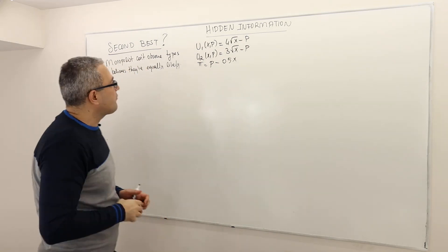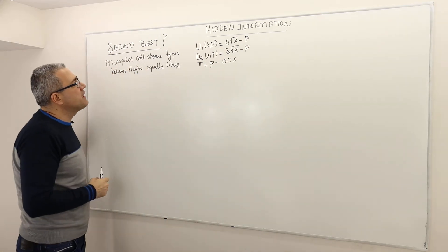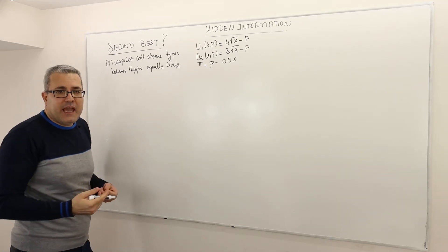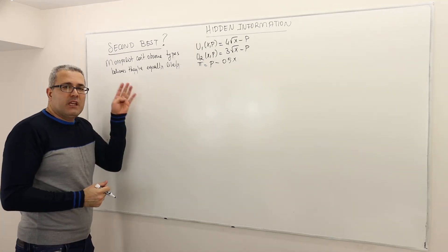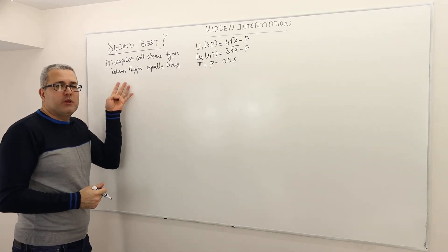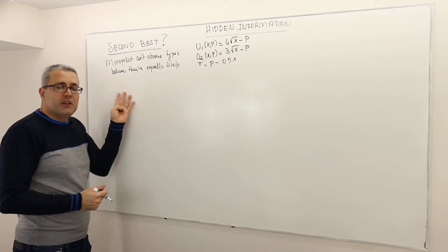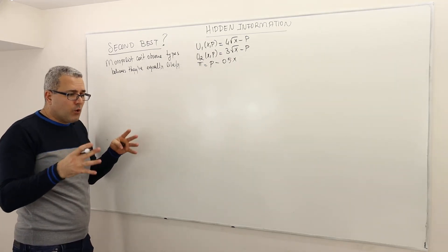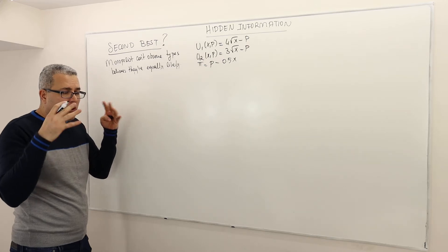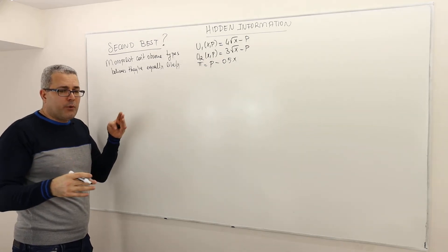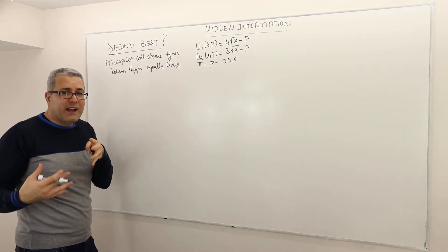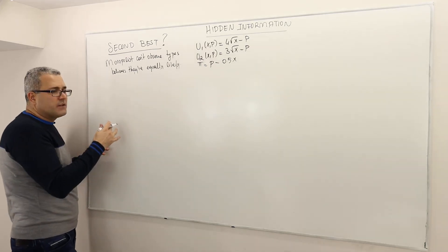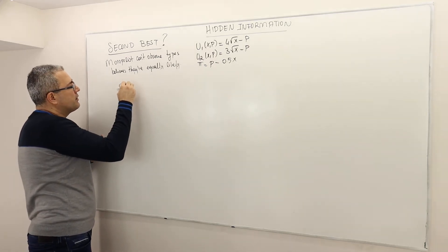What is going to be the second-best solution? Let's write down the monopolist optimization problem subject to the constraints. The constraints are such that you offer a contract, a package, where both type 1 and type 2 are actually willing to buy those packages. Here is the maximization problem.